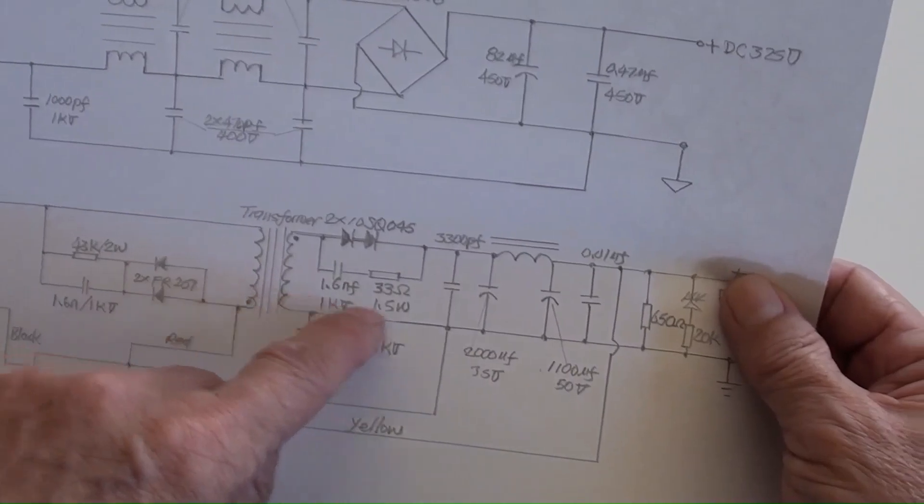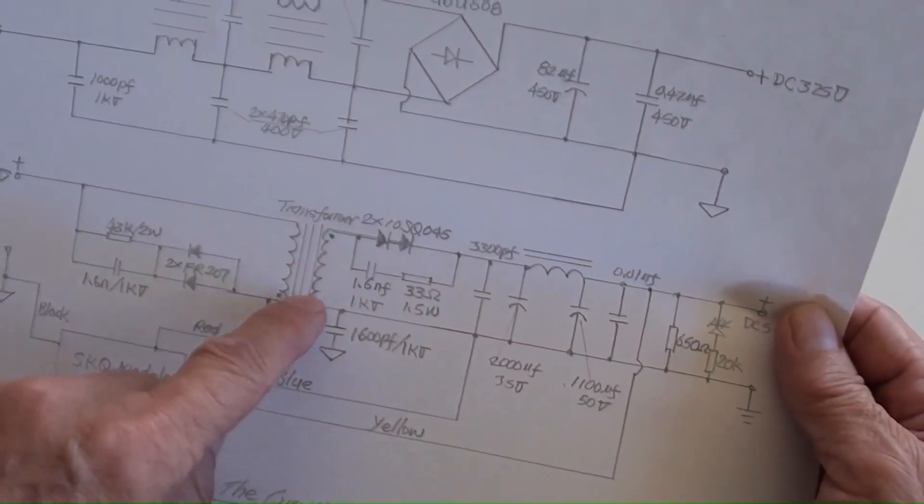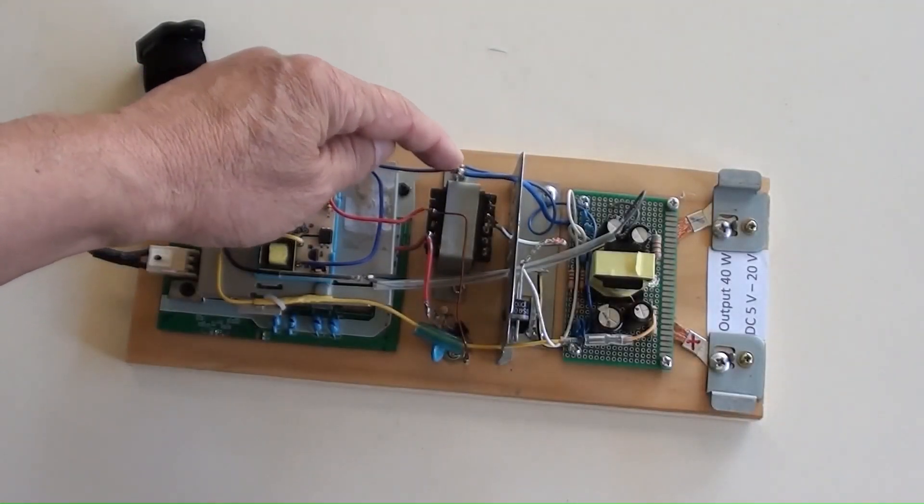The output DC negative, or earth, is connected to the secondary's common earth terminal from the transformer.